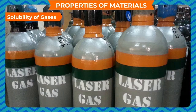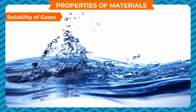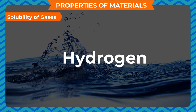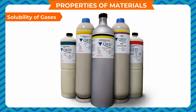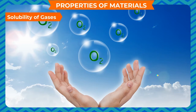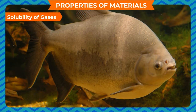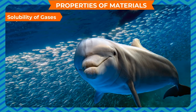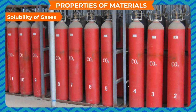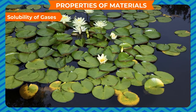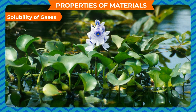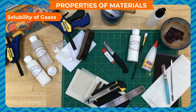Solubility of liquids: most liquids are insoluble in water, but liquids such as alcohol, vinegar, and lemon juice dissolve in water — these are called miscible liquids. Liquids insoluble in water are called immiscible liquids. Solubility of gases: most gases such as nitrogen, hydrogen, and carbon monoxide are insoluble in water. However, oxygen is slightly soluble in water — it is this dissolved oxygen that enables fish and other aquatic animals to breathe underwater. Carbon dioxide is also slightly soluble in water and acts as a source of food for aquatic plants during photosynthesis.